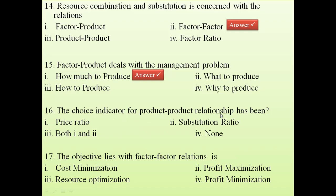Question 16: The choice indicator for the product-product relationship. Among the options — price ratio and substitution ratio — both are correct. Substitution between products involves prices, so the answer is both option one and option two.